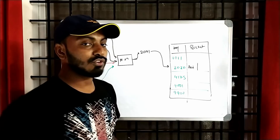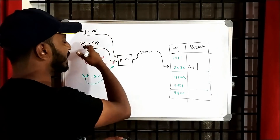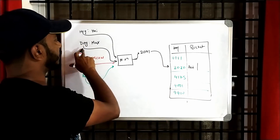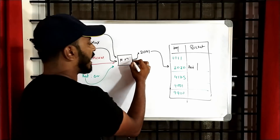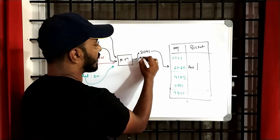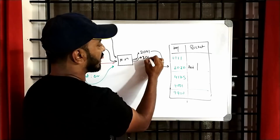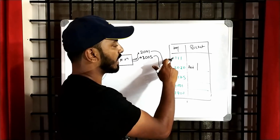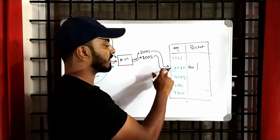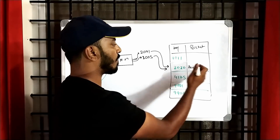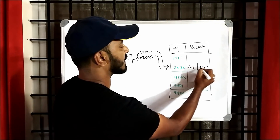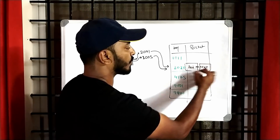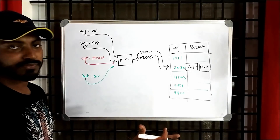You might be thinking: what if another key also hashes to a number less than 3030? Say we pass another key to the hash function and it returns 2005. In that case, it will also find the next greater bucket key, which is 3030, and save its value there using a linked list — just like before, with a linked list at that location. That's it, it gets linked to the existing entry.